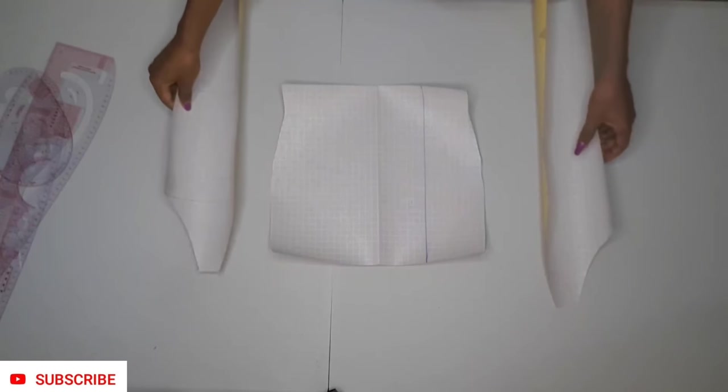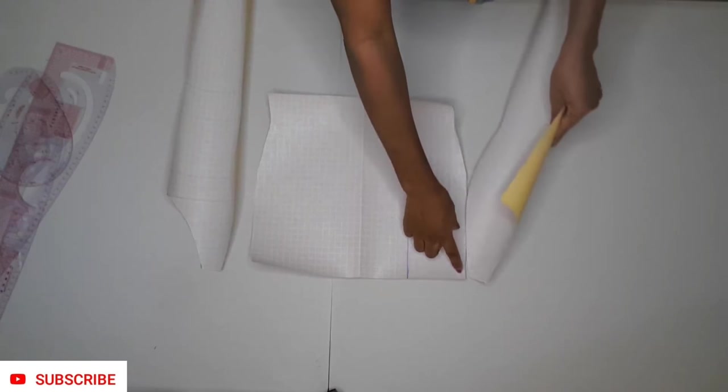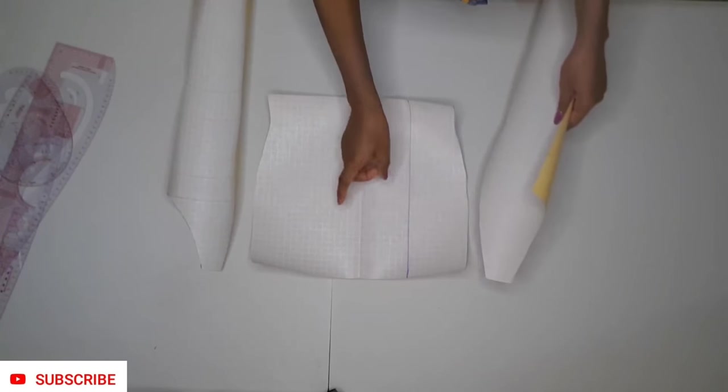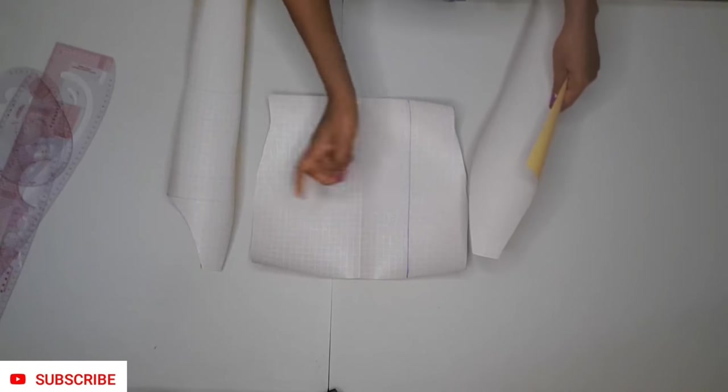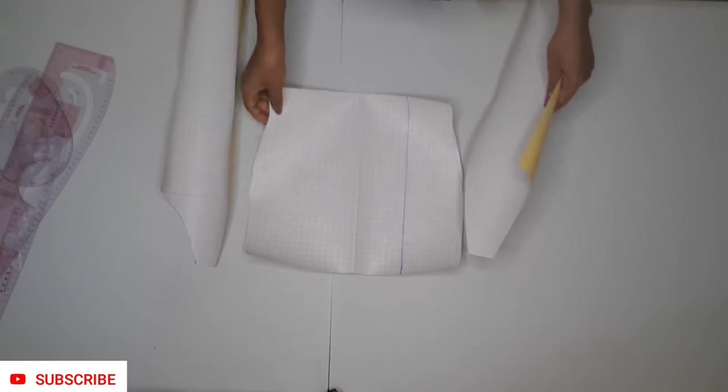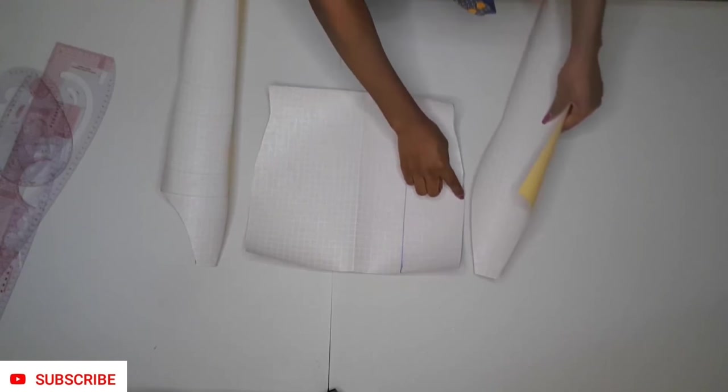The next thing you should do now is to grab your side panel. You're going to be attaching it - you're going to pretend basically as if you are sewing this already. So you are going to be joining the dart part with that part of the side panel as well, and you are going to be joining it by half of an inch.